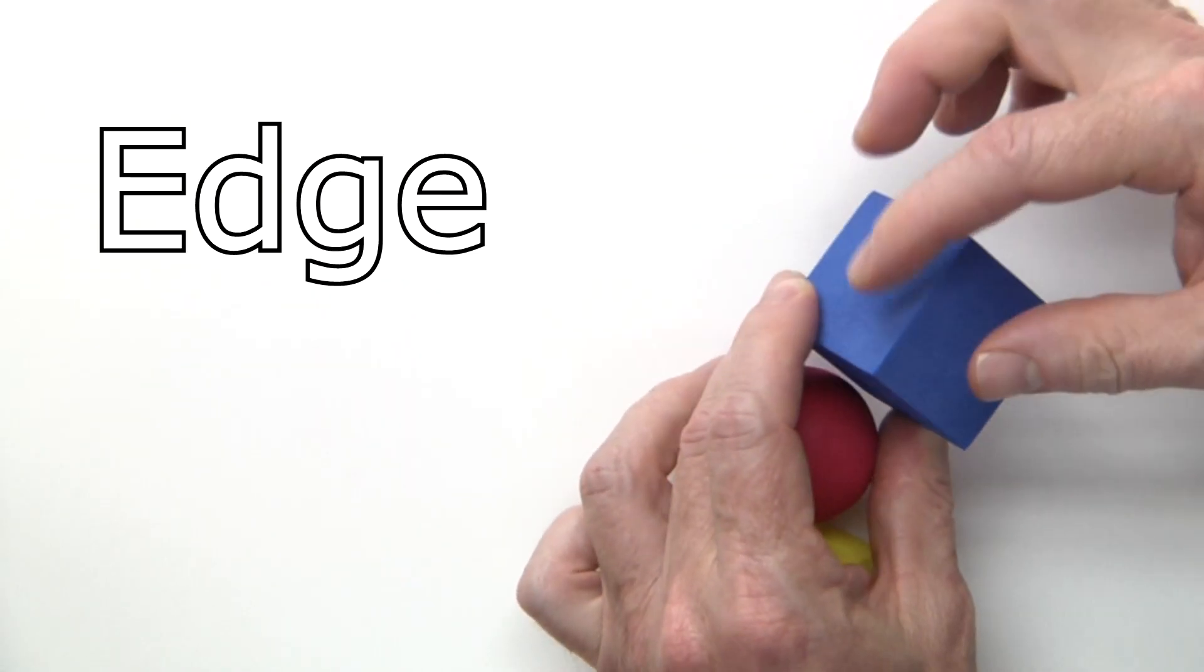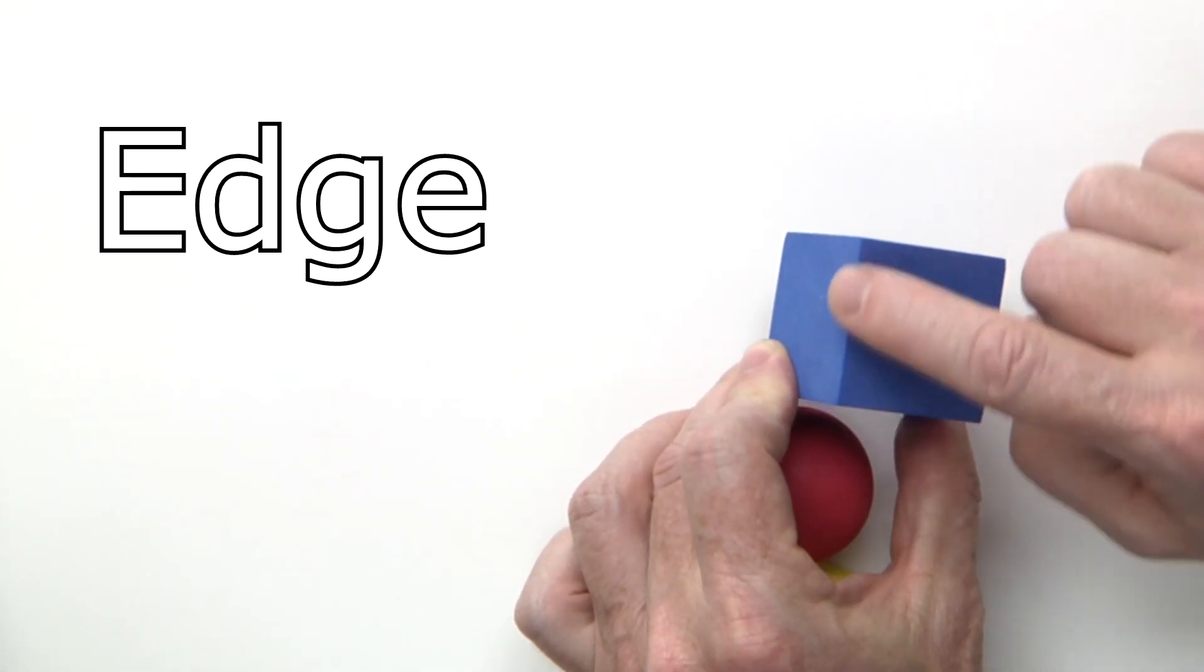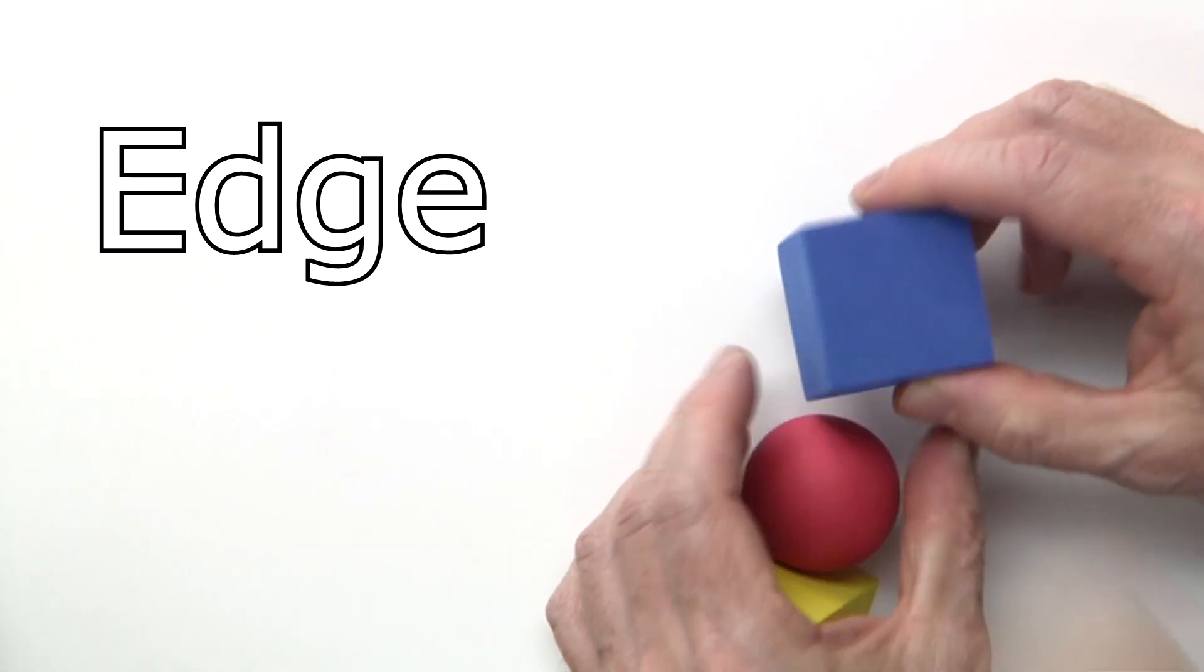Also, an edge. This is called an edge right here. And it's like the edge of a table. So can you feel that with your finger? That's an edge. Yeah.